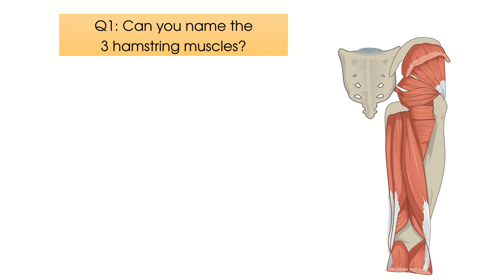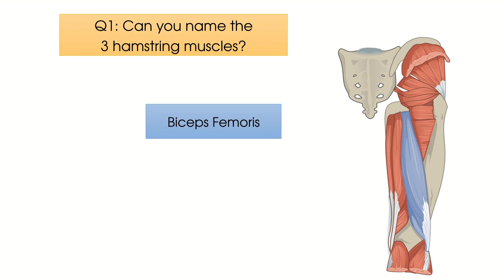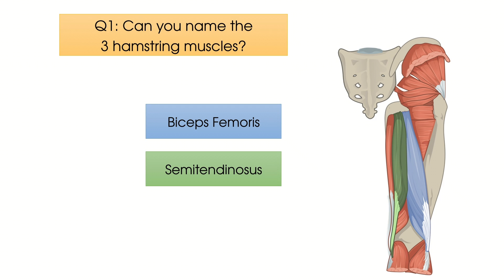The three hamstring muscles, which you will see highlighted here, are biceps femoris, semitendinosus and semimembranosus.